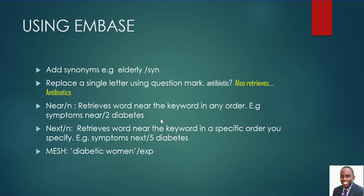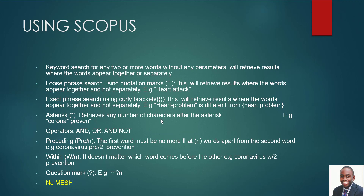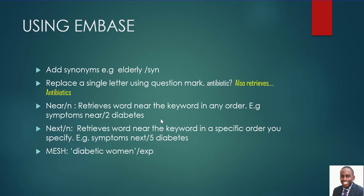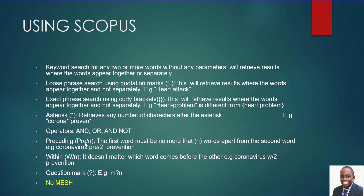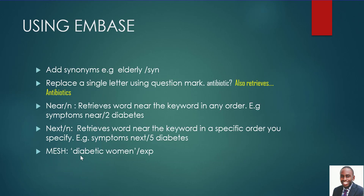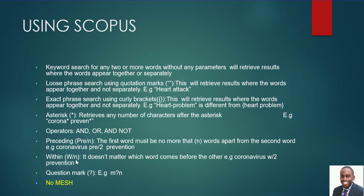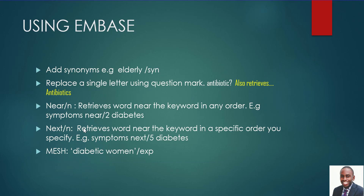The next database to know is Embase. The search strategies are similar across databases, but each has its own unique features. In Scopus we used PRE/n and W/n for proximity, but in Embase you use NEAR/n. For example, 'symptoms' NEAR/2 'diabetes' means give me articles that have the word symptoms near diabetes by no more than two words in any order. So Embase's NEAR/n is similar to Scopus's W/n.